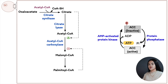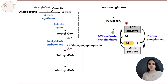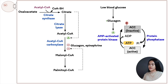Glucagon is secreted when blood glucose levels are insufficient. It inactivates acetyl-CoA carboxylase and thus fatty acid synthesis. The same is true for epinephrine. When glucose is low, we don't need to synthesize fatty acids — we need to activate pathways that increase glucose. Glucagon activates cyclic AMP-dependent protein kinase (PKA), which phosphorylates ACC, inhibiting it and slowing down fatty acid synthesis.